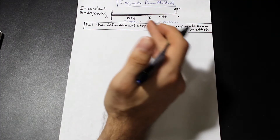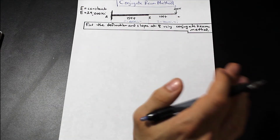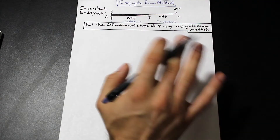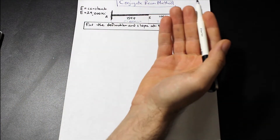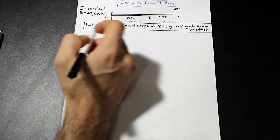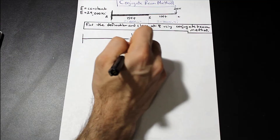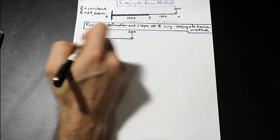Let's get started. The first step in the conjugate beam method is to take the beam as is and find the moment diagram. If you need to find the shear first and then the moment that's okay. If you're comfortable finding the moment diagram straight up that can save you some time — that may be something you want to practice.